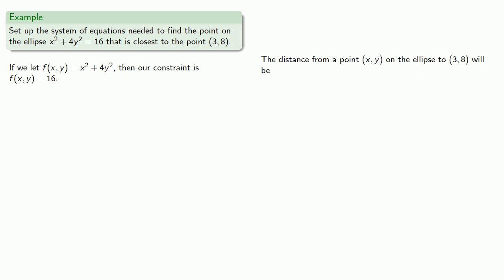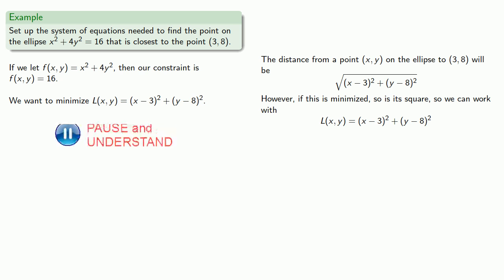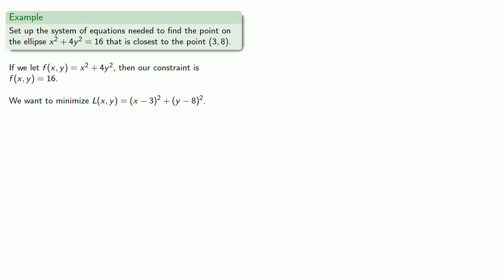The distance from a point xy on the ellipse to the point 3, 8 will be, and again, as this is minimized so will its square, so it's easier and better to work with our objective function. We want our gradient of our objective to equal lambda times the gradient of our constraint, so we'll find those partial derivatives.